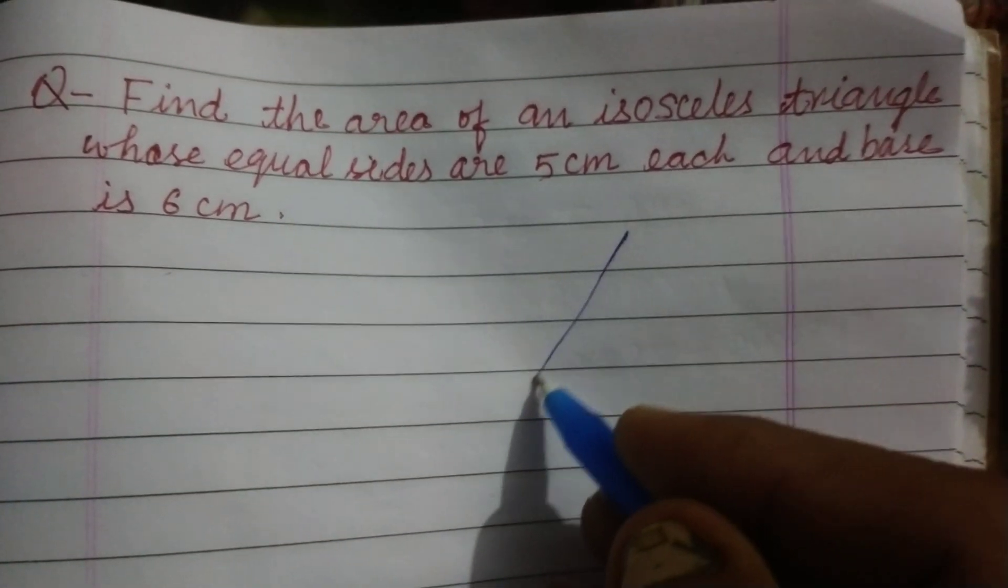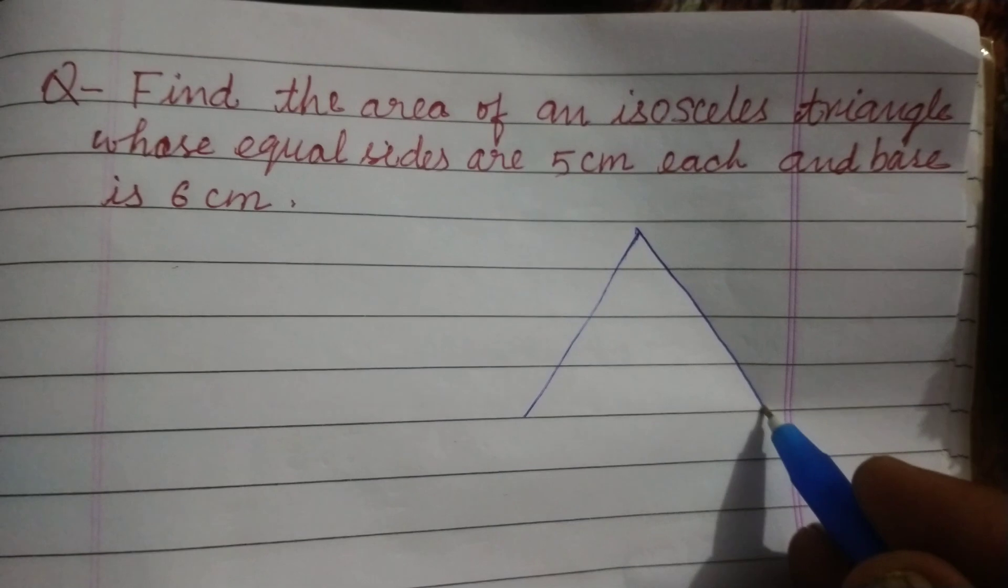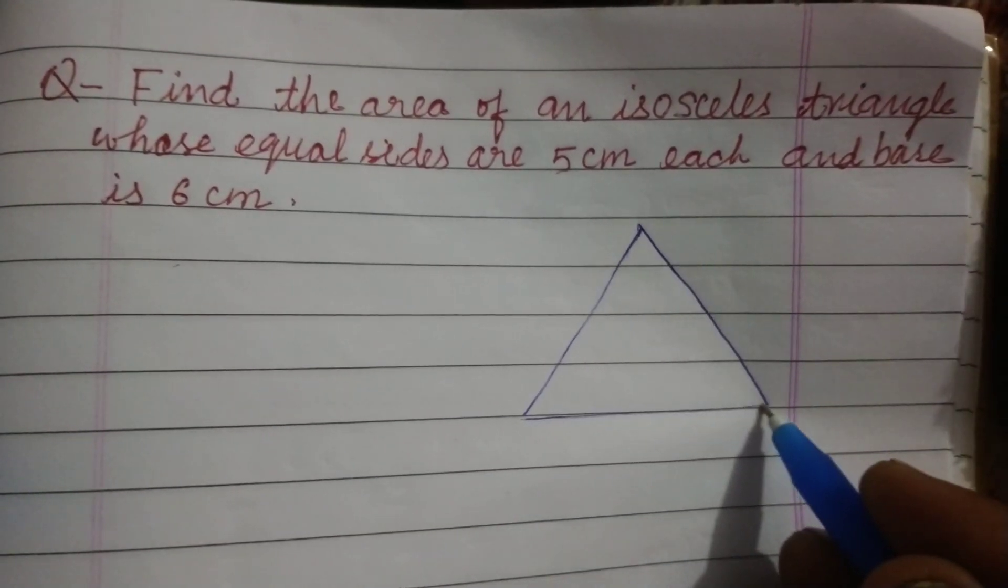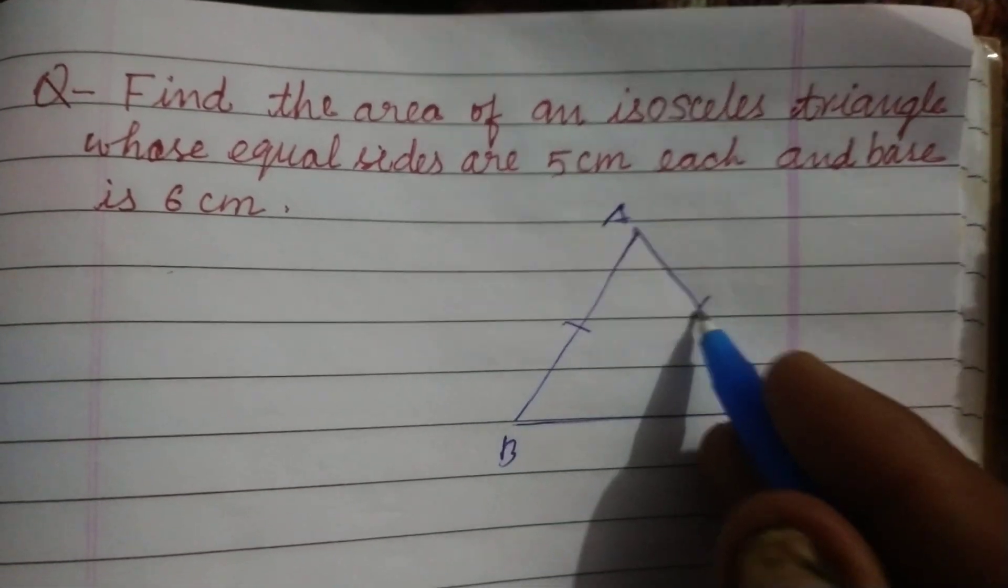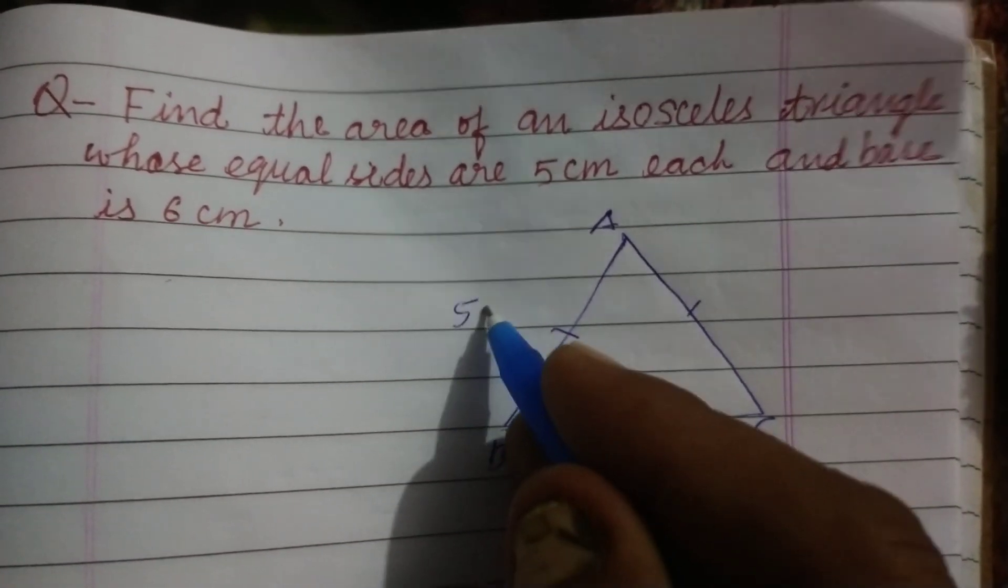So first we make an isosceles triangle ABC. Its equal sides are 5 cm each.